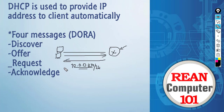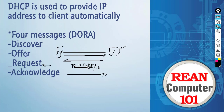The PC receives the offer and if the IP address looks interesting and the client wants it, it's going to send the DHCP Request back to the server saying: hey, the IP address you just sent me — I'm interested in it and I want it. Can you lease that IP address to me?